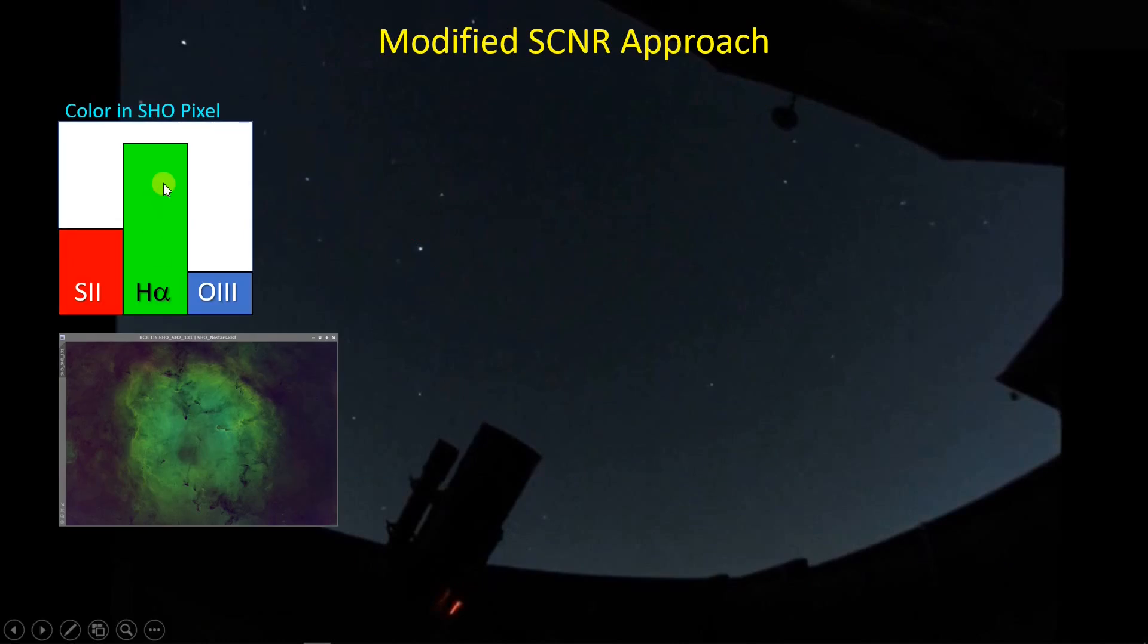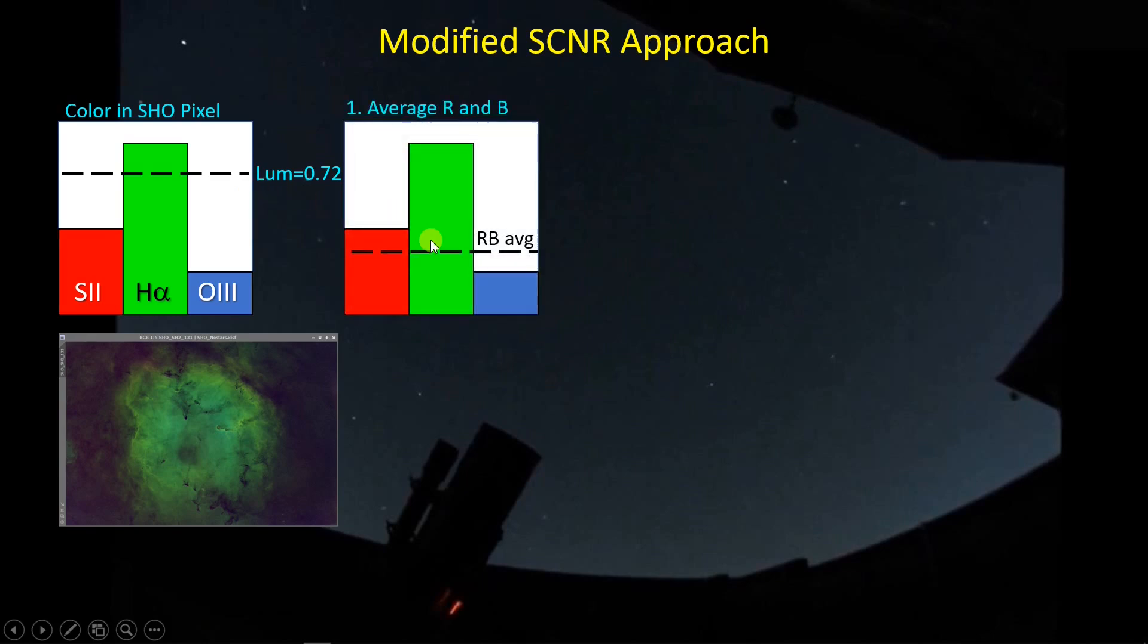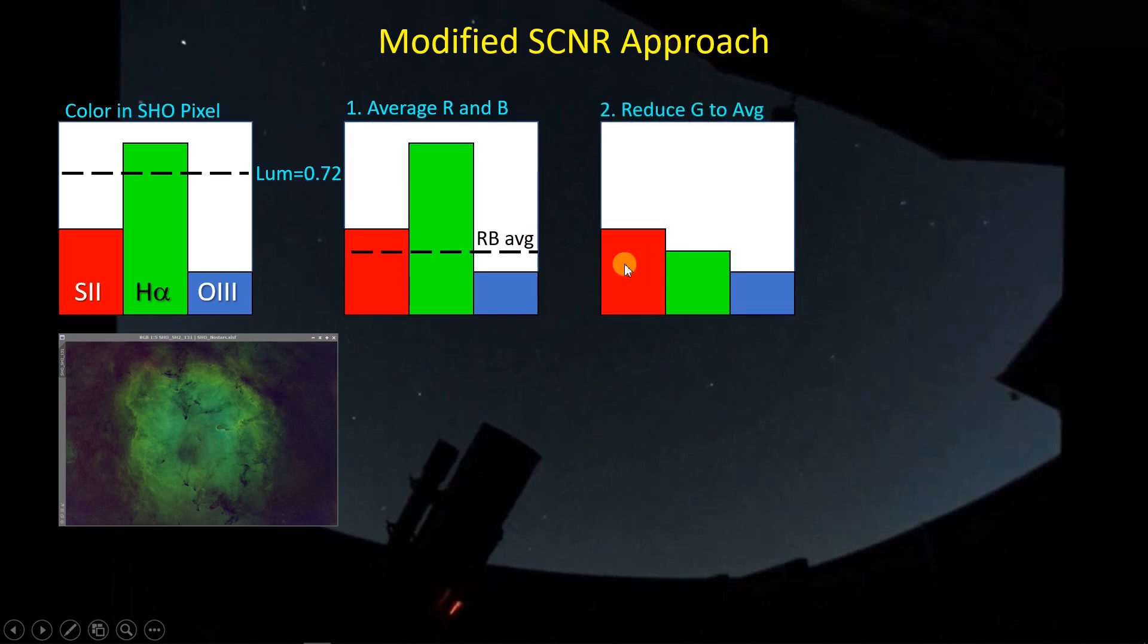I'm taking another look at the SCNR tool, but instead of using SCNR, I'm doing everything that SCNR does except that I'm going back in and pumping up the luminosity to what it was before I reduced the green. If we start off with our green image, any one pixel will tend to have a very strong contribution of HA and a much weaker contribution of sulfur and oxygen. If you calculate the luminosity based on these proportions, recognizing that this upper level is saturation which equals 1, I'm getting a luminosity of 0.72. If I then average the red and the blue following the SCNR approach, when I reduce the green down to that level, I get this. But this is what SCNR leaves us with, which is the luminosity now of 0.41 instead of 0.72.